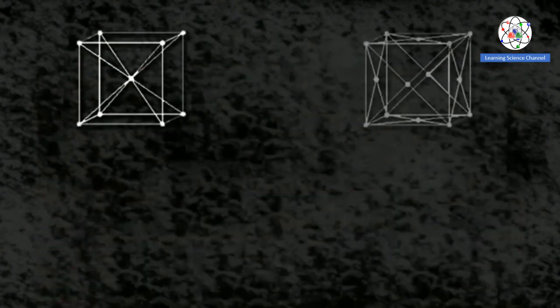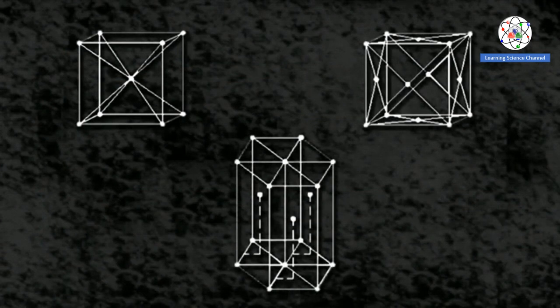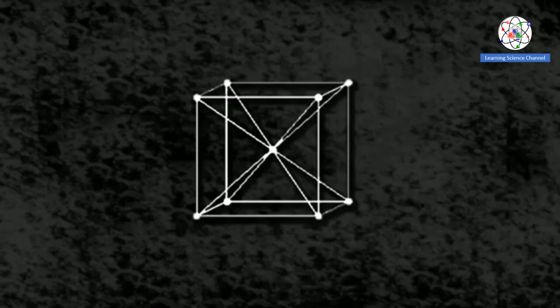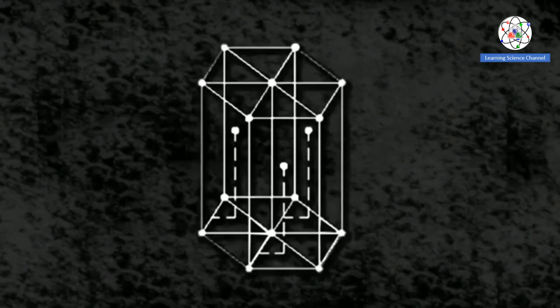The interesting concept here is that these different allotropes arise at different temperatures and pressures, so one allotrope of iron can change into another allotrope.